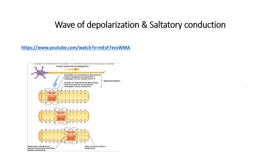Depolarization actually occurs in kind of a wave of action potential, or a wave of depolarization. This particular section has positives on the inside, so it's said to be depolarized. What will happen now is the next section will then become depolarized, and we get this wave-like motion of depolarization that occurs down the axon of a neuron until it reaches the axon terminals. The action potential propagation — the direction of the impulse — is going from left to right. Always behind it, we have to reestablish polarity behind it.